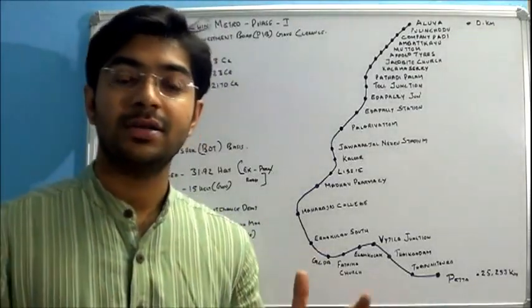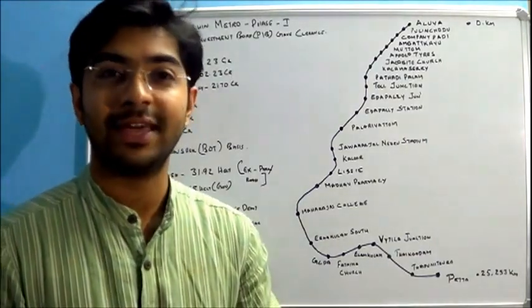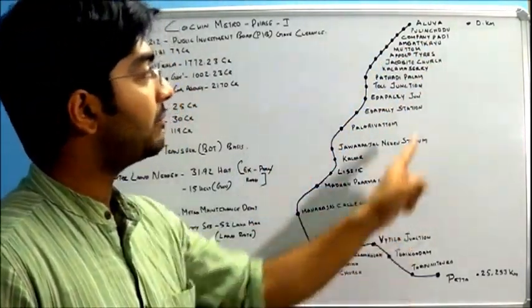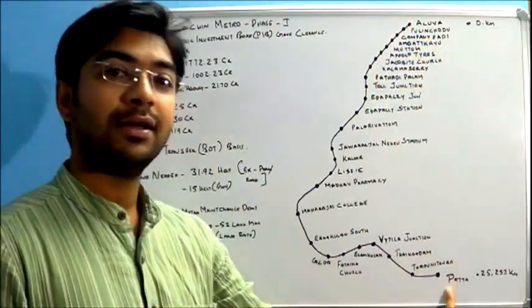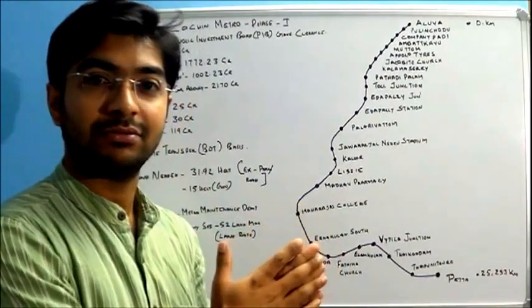In one word, what's Cochin Metro? It's the dream of Kochi, the dream of Kerala. With 26 stations spanning from Aluva to Petta at a length of 25.253 km, that's Cochin Metro.